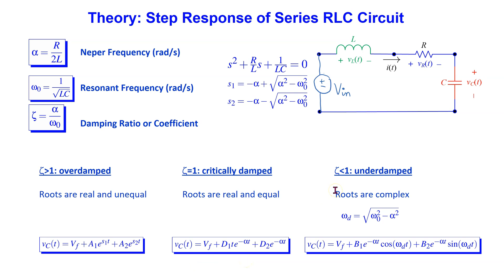When zeta is less than 1, then the response is underdamped. In this case, the roots are complex. For the underdamped case, we define the damping frequency omega_d as follows. The equation for the voltage across the capacitor has this general form, and we can see that it depends on Vf, alpha, and omega_d.